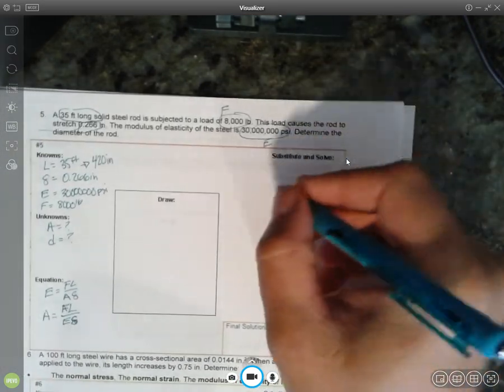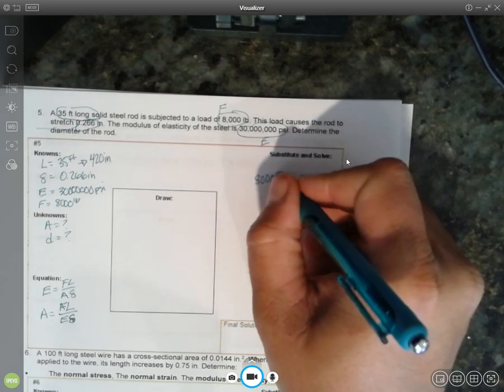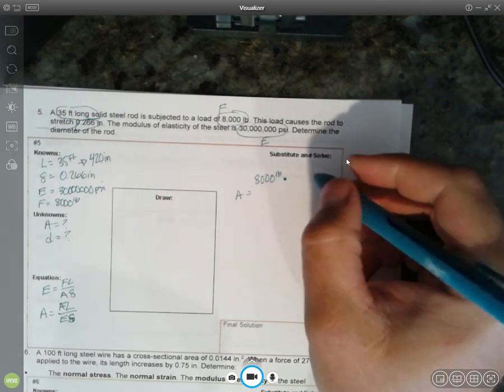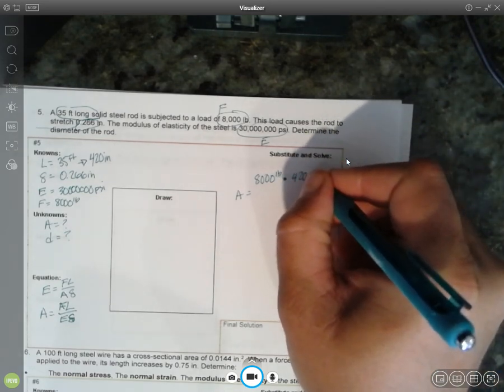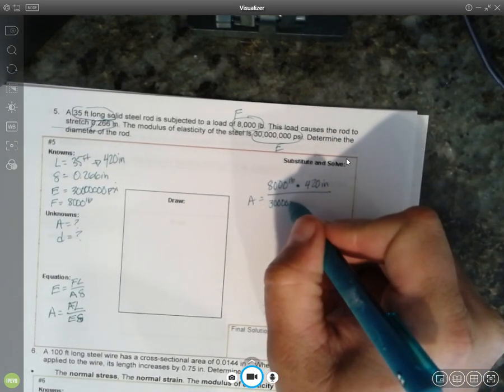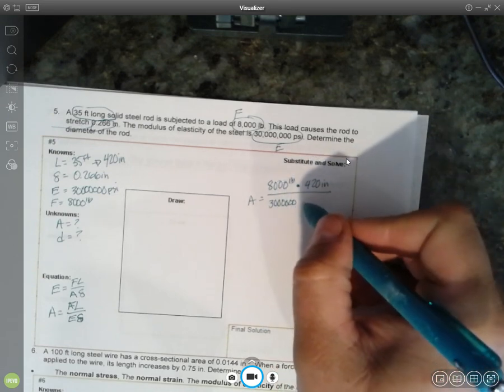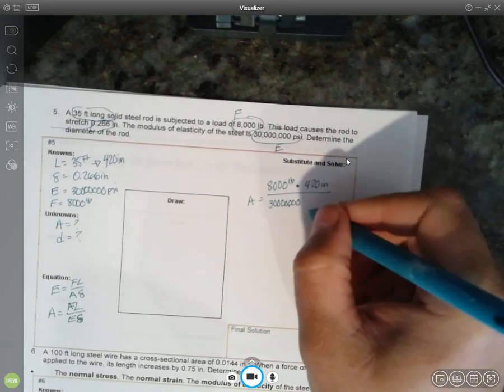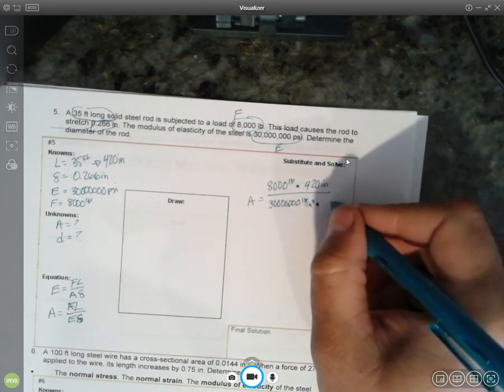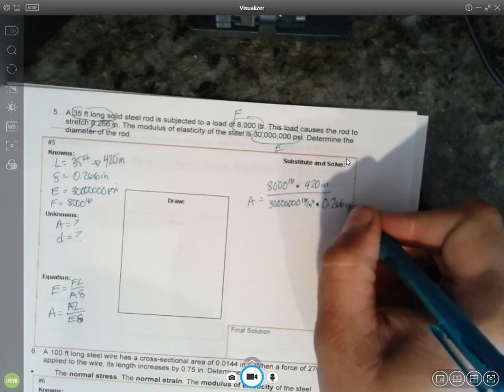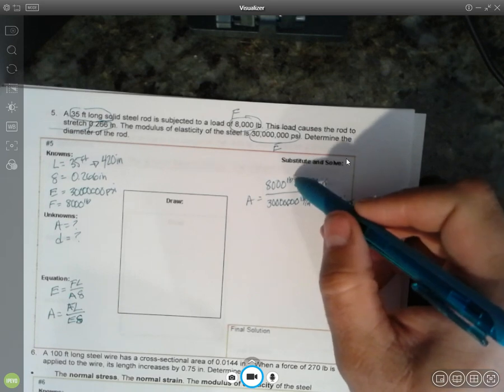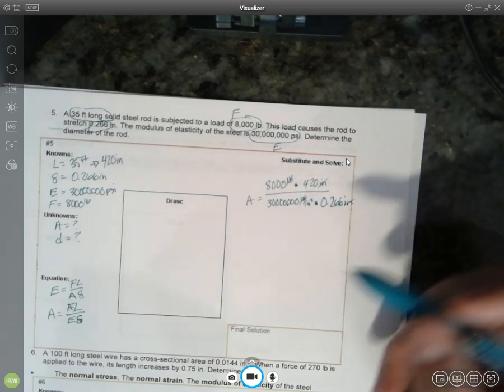So the force, 8,000 pounds, and this is solving for area, times the length, 420 inches, divided by 30 million pounds per inch squared times the deformation inches. All right. Those can cancel. Pounds can cancel. And it'll leave me with inches squared.